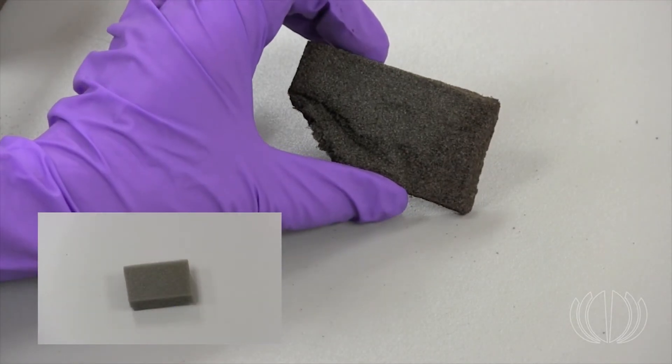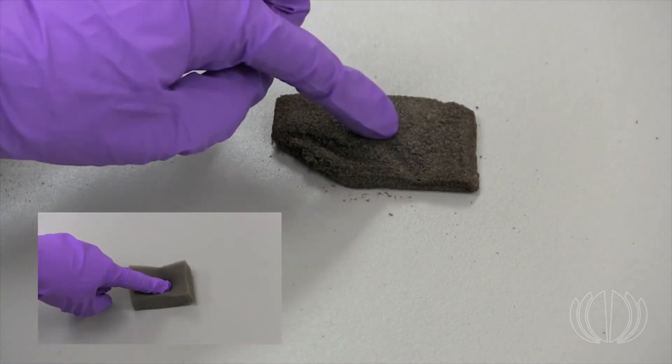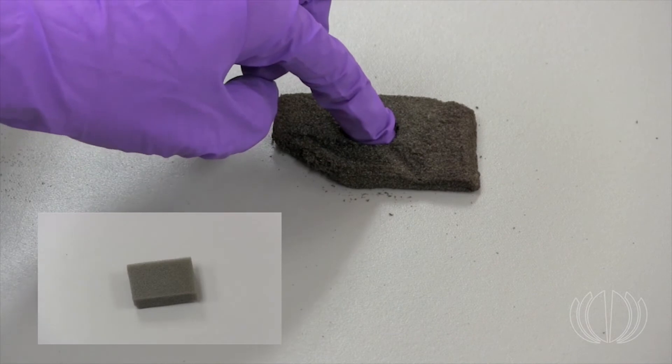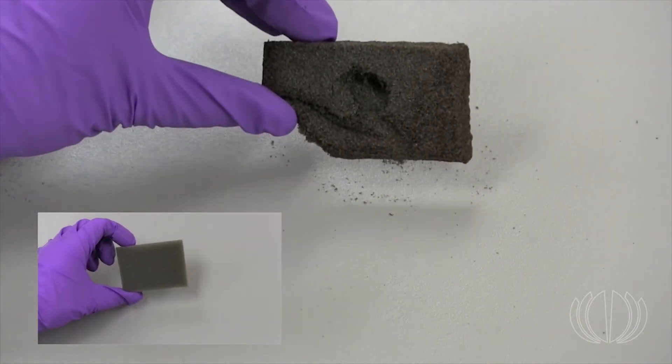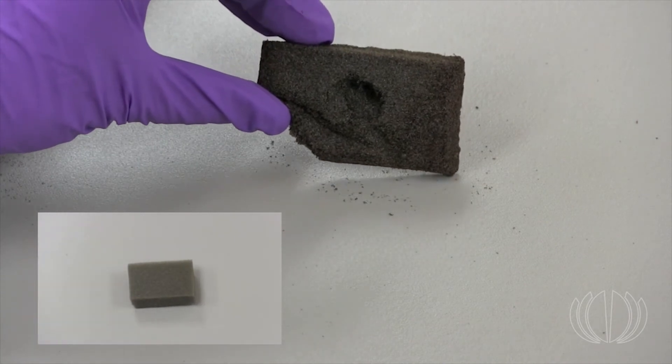Some materials, especially those in archival collections, deteriorate faster as RH gets higher. And some materials deteriorate faster as temperature gets higher. For some materials, like polyurethane foam and magnetic media, room temperature could be considered too high.